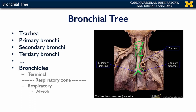If anything makes it down there and touches that carina, it's going to cause a massive bronchospasm or a coughing fit to hopefully eject it out. These primary bronchi divide into secondary bronchi. Secondary bronchi serve the lobes of the lung — there are three lobes on the right side and two lobes on the left side. Secondary bronchi then spawn tertiary bronchi, which serve individual bronchopulmonary segments — surgically resectable segments of the lung.